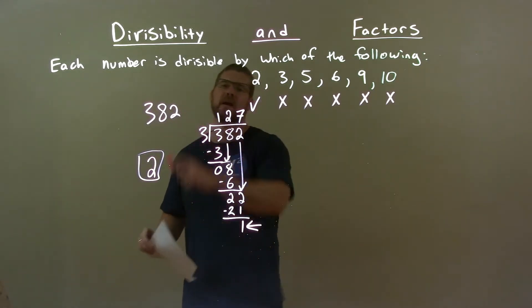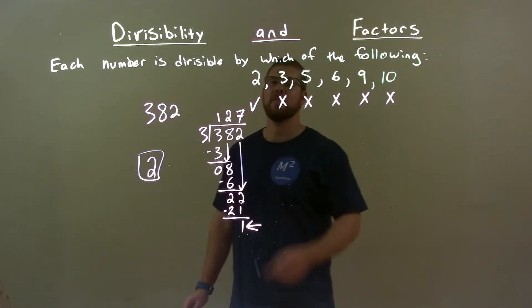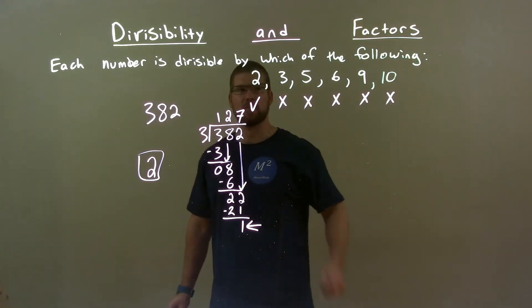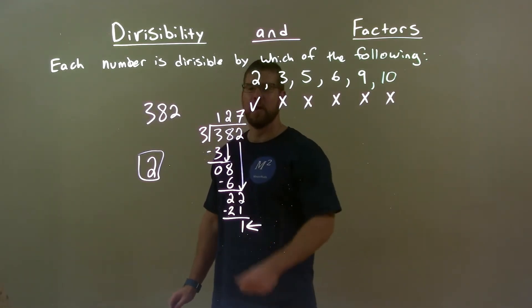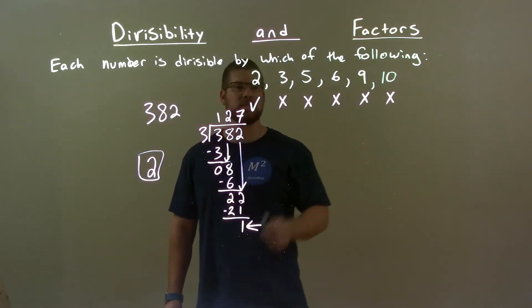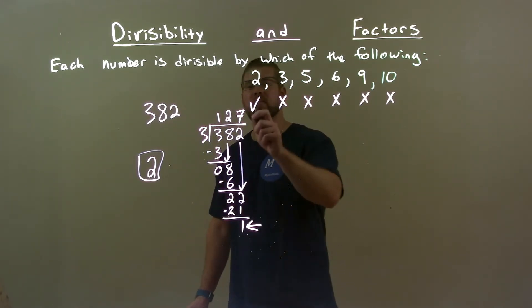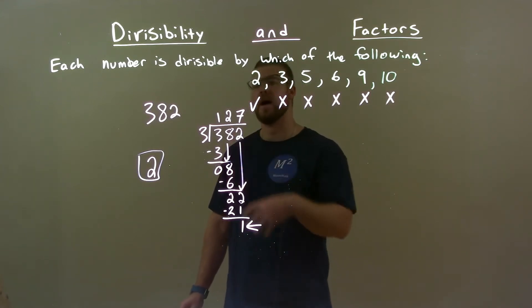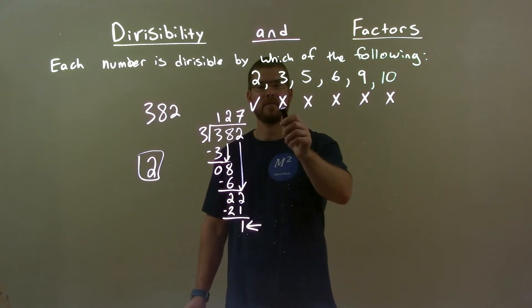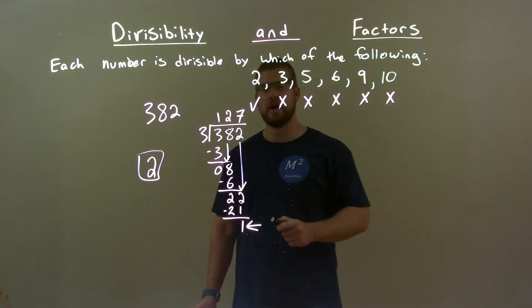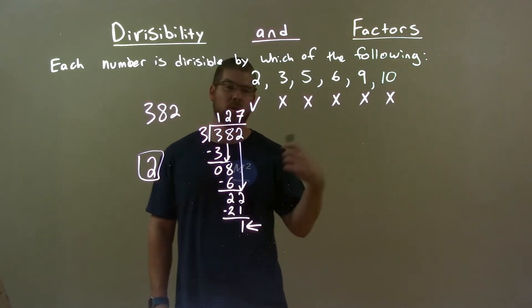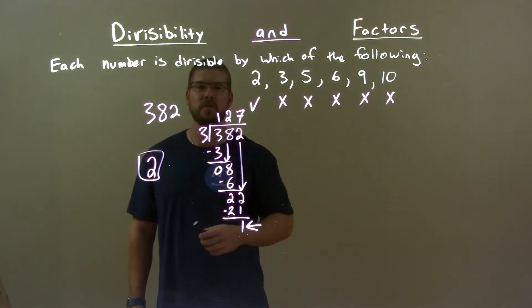Quick recap. We're given 382 and we have to see if these numbers, any of them, go into it. Since it's even, 2 works. Found out with long division, we had a remainder of 1, so 3 does not work. This does not end in a 5 or a 0, so 5 is out. Since 2 and 3 both do not go into 382, 6 is out. 3 does not go into 382, so 9 is out. Number does not end in a 0, so 10 is out. Our only answer here is just 2.